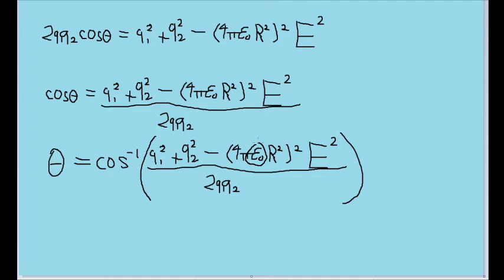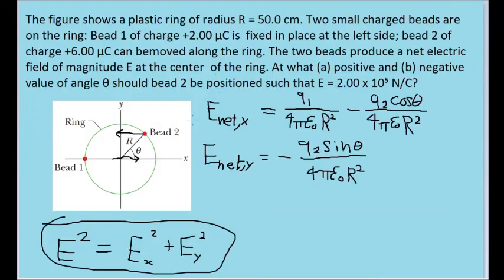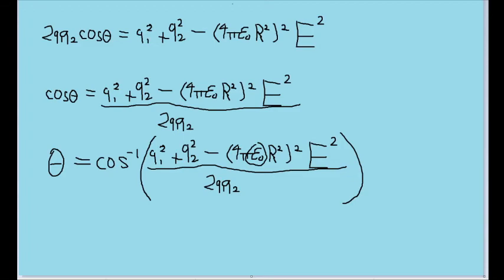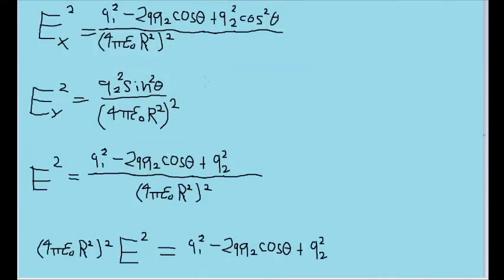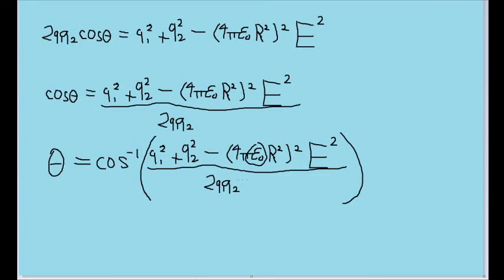You can use the vacuum permittivity constant for epsilon naught, use the electric field value we're given for capital E, and for the two charges we're given, well, we're given both charges, but make sure you convert from microcoulombs to coulombs by multiplying both values by 10 to the negative 6. If you plug all these values properly into your calculator and make sure you're in degrees mode, then you should get an angle of approximately 67 degrees.